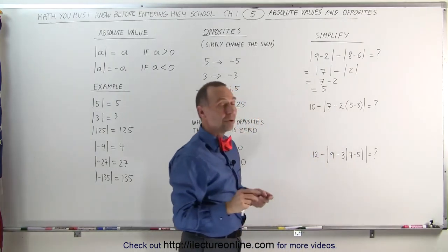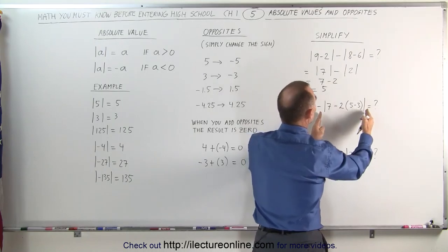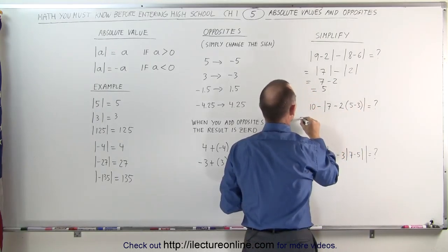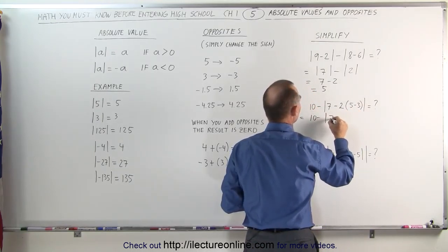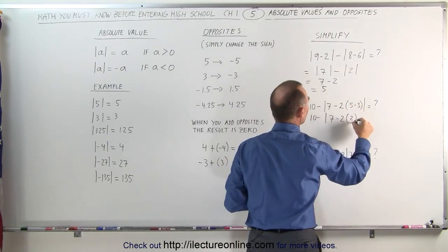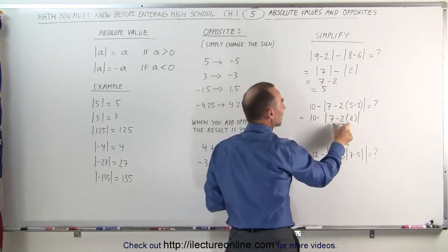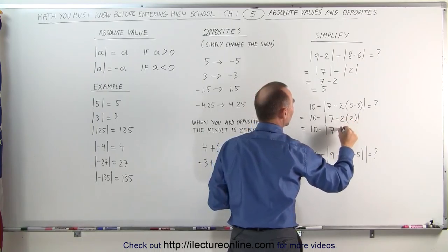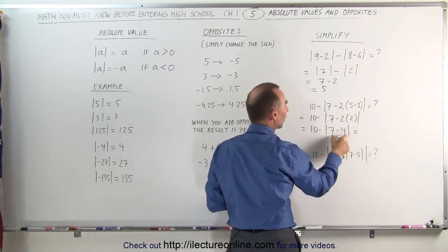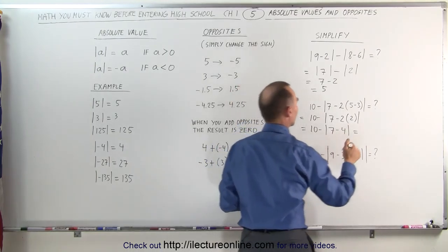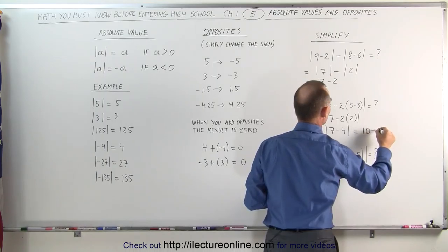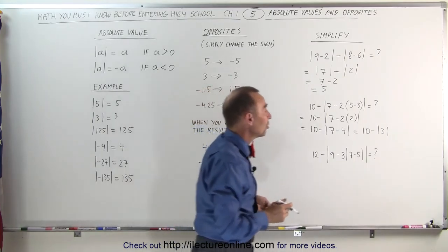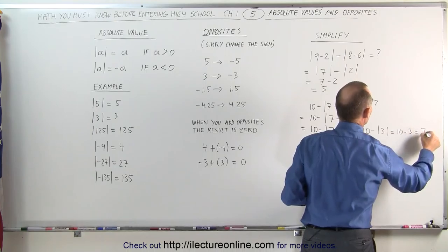Let's try this one. You want to work out what's inside the absolute value symbols first, and inside you find parentheses, so you always work from the inside out — do what's inside the parentheses first. This becomes equal to 10 minus the absolute value of 7 minus 2 times (5 minus 3), which is 2. Continuing inside out, this becomes 10 minus the absolute value of 7 minus 2 times 2, which is 4. Now work out what's inside the absolute value symbols: 7 minus 4 is 3. Since 3 is a positive number, you can remove the absolute value symbols and nothing changes. This therefore becomes 10 minus 3, which is equal to 7.